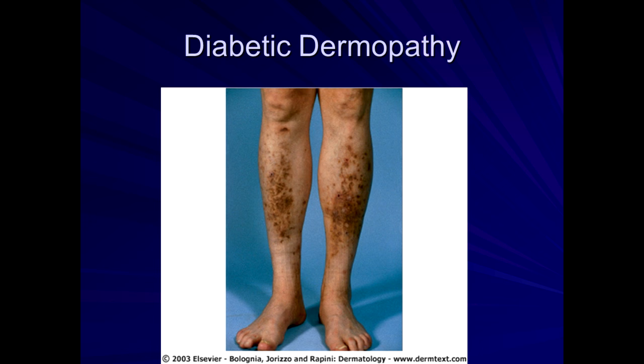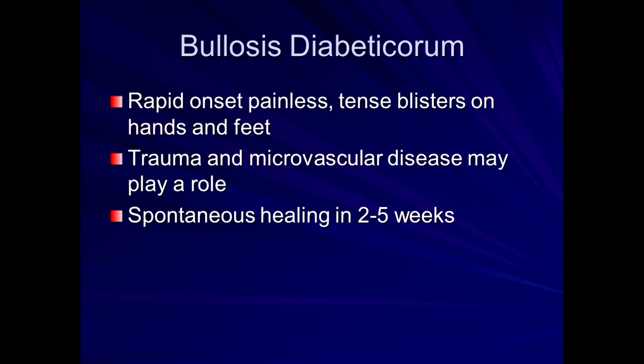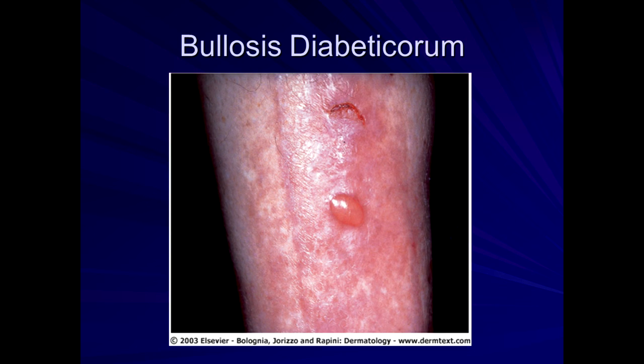Rapid onset of painless tense blisters on the hands and feet is called bullosis diabeticorum — blistering diabeticorum. This is possibly trauma-induced, spontaneously heals within about a month to a month and a half. Patients can get these spontaneous blisters on their arms or legs.